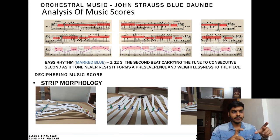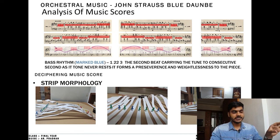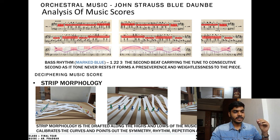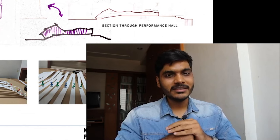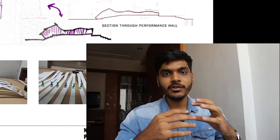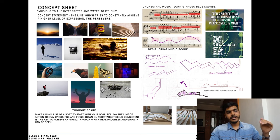I saw on the internet where someone marked out a musical score similarly. That's why I chose this method — strip morphology. The strip morphology is drafted along the highs and lows of the music, calibrating the curves and points of symmetry, rhythm, repetition, and juxtaposition. This is the concept sheet — it's a very basic concept sheet but it did track. The concept statement is: the line that tries to constantly achieve a higher level of expression. I then chose this music score, did the line development, and then the form development, trying to create a section through the form.